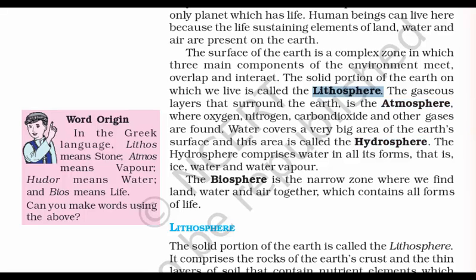So what is lithosphere? The solid portion of the earth on which we live is called the lithosphere. In simple terms, lithosphere is nothing but the rocky bed that lies beneath your foot. Similarly, the gaseous layer that surrounds the earth is called atmosphere, where oxygen, nitrogen, carbon dioxide and other gases are found. Last, hydrosphere — by the name you can figure out, it's related to water. The hydrosphere comprises all forms of water, that is ice, water and water vapor.